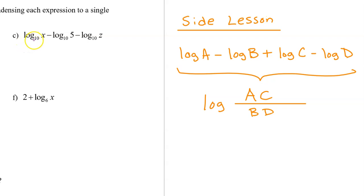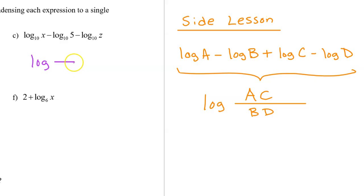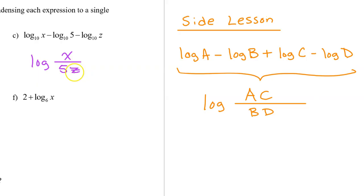So back to part c, I see three terms, so I can rewrite this as a single log. They wrote log base 10, but if I don't write the 10, it's understood to be 10. The fact that I see minus signs means I will definitely have a quotient involved, so I'm going to set up my fraction bar. The first term is positive, so x goes in the numerator. The second term is negative, so the factor of 5 will be in the denominator. The third term is also negative, so the z factor will end up in the denominator.